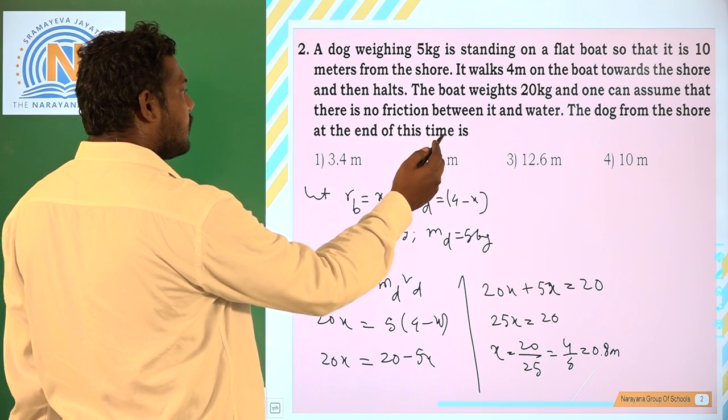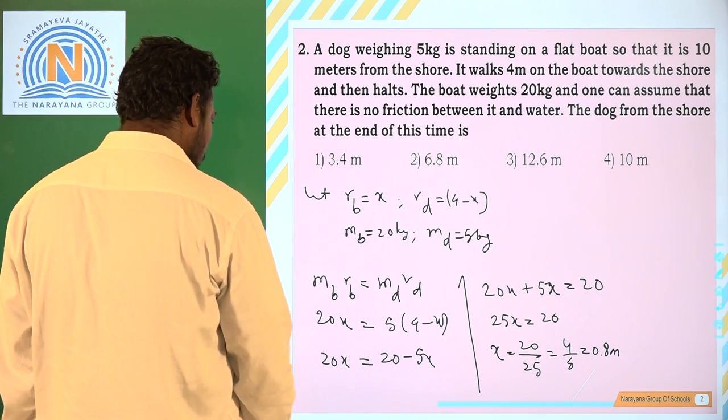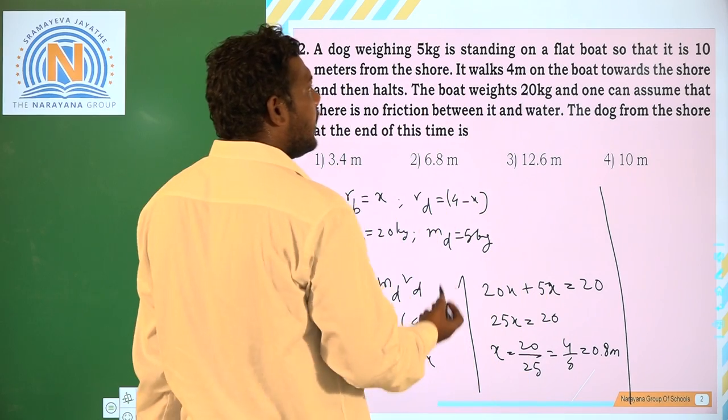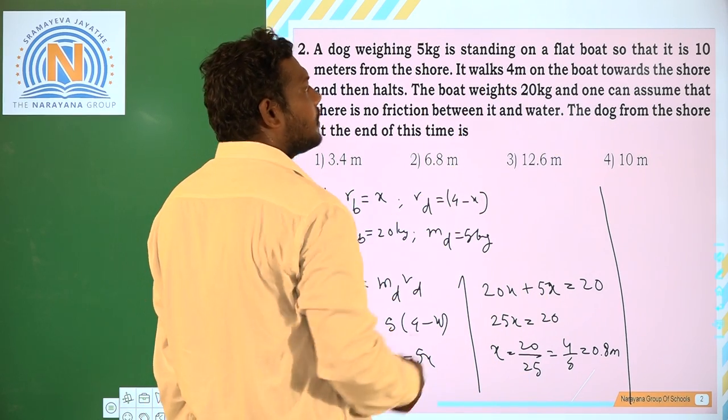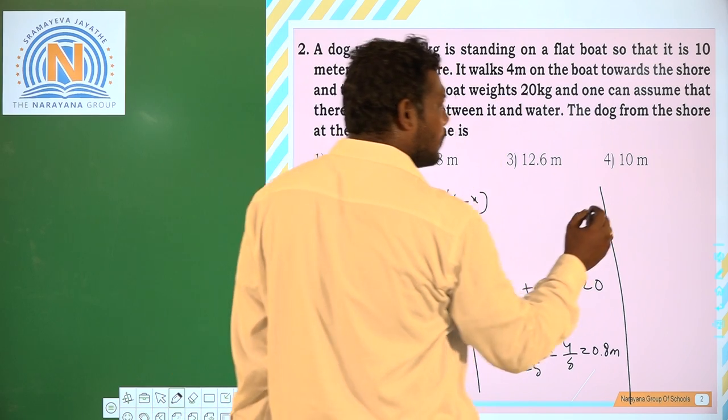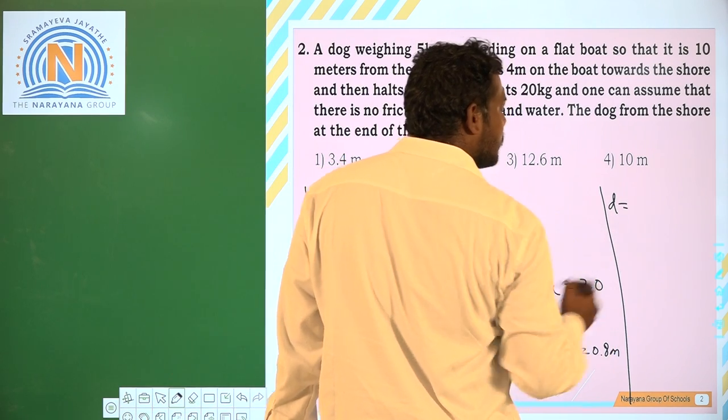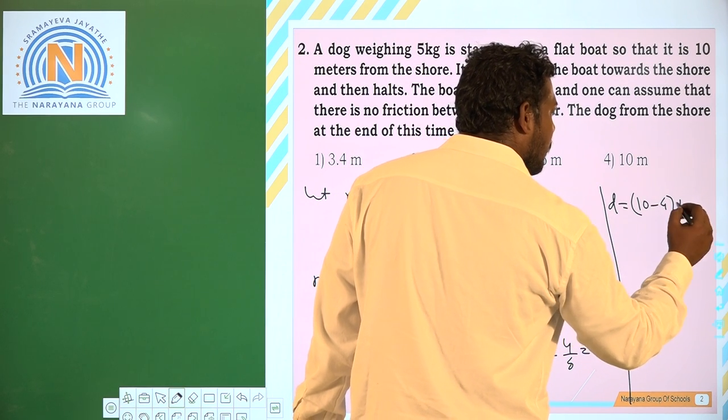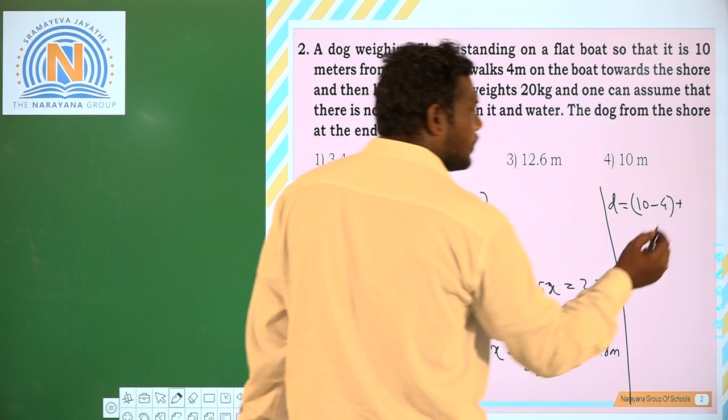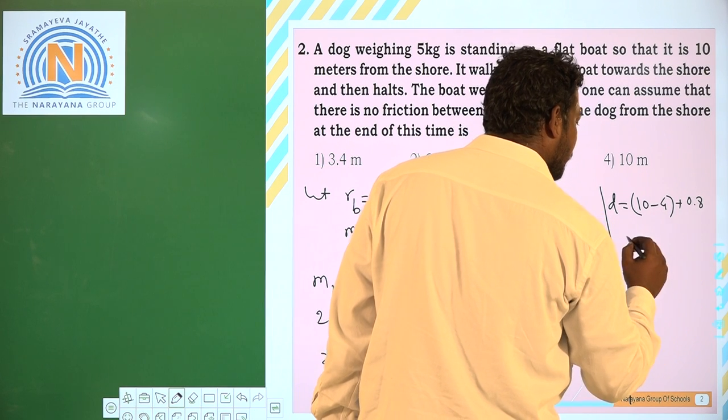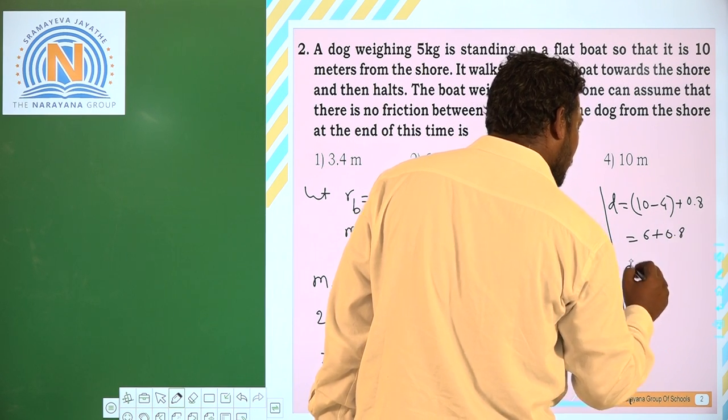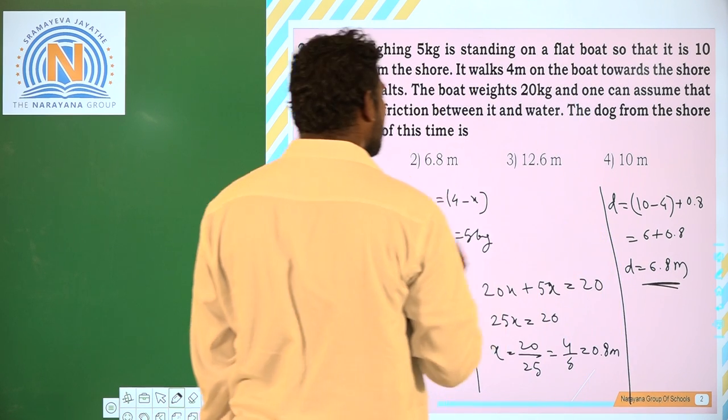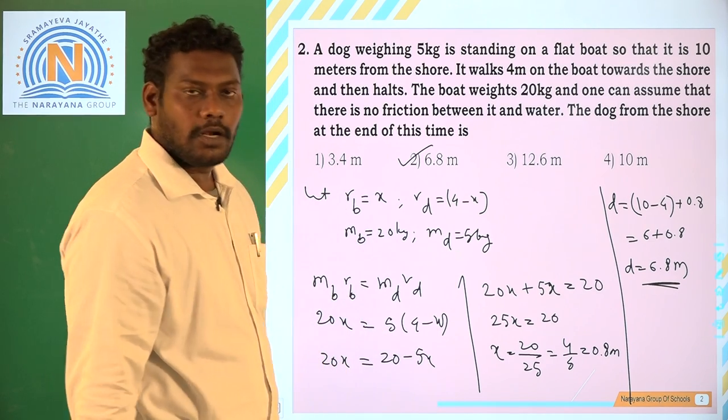Now the dog from the shore. So here the dog initially boat was at 10 meters and dog moved 4 meters. So now the distance of dog from the shore is 10 - 4 + x. That is 6 + 0.8 = 6.8 meters. So the dog is at a distance of 6.8 meters from the shore.